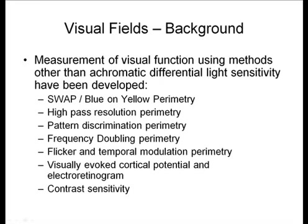Visual function is a complex thing, and as such there are many different methods of measuring it aside from our standard visual field. These include SWAP or shortwave automated perimetry — typically blue-on-yellow perimetry — high pass resolution perimetry, pattern discrimination perimetry, frequency doubling perimetry, flicker and temporal modulation perimetry, visually evoked cortical potentials and ERG, and contrast sensitivity. This tells you that vision is a very complex function and perhaps we still don't have the most optimal way of measuring it for glaucoma.